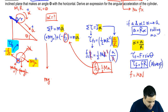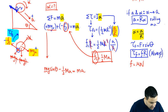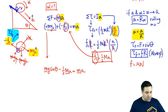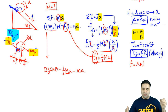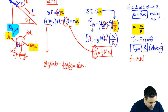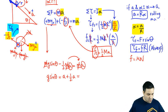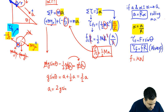So substituting in: MGX becomes MG sine of theta. Friction is one-half MA, so: MG sine of theta minus one-half MA equals MA. The mass M cancels since it's the same object throughout. Moving terms: G sine of theta equals A plus one-half A, which is three-halves A. So A equals two G sine of theta divided by three. That's the final answer for A.